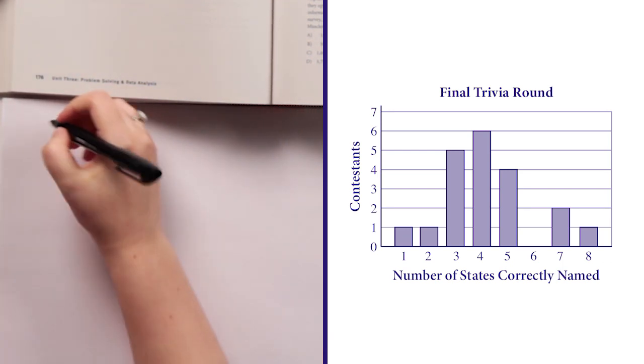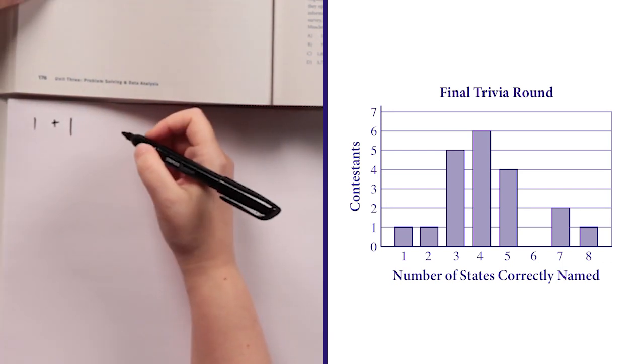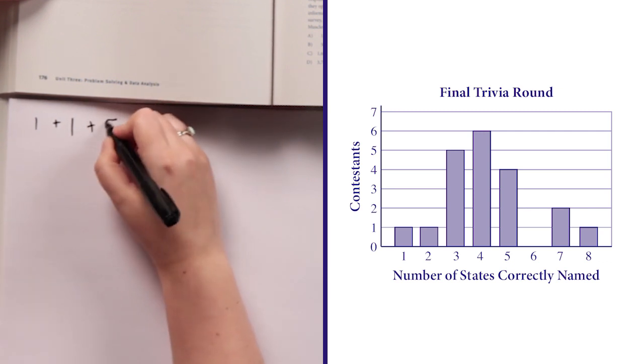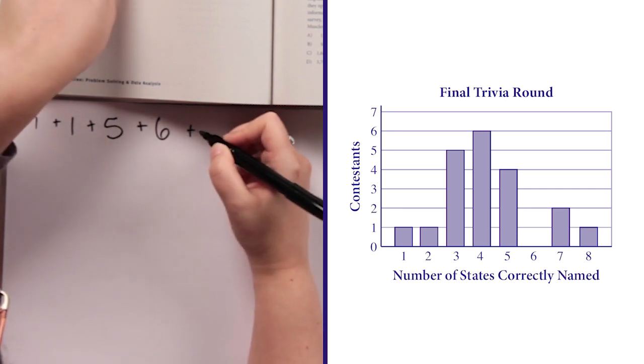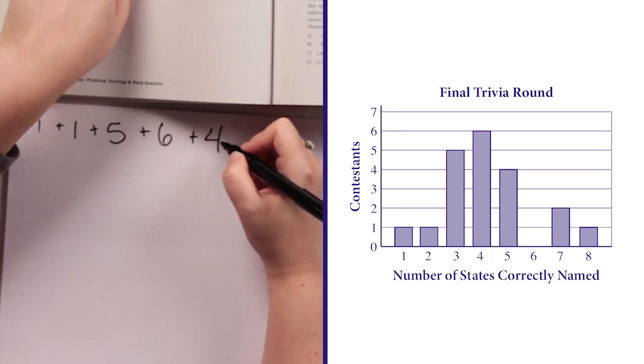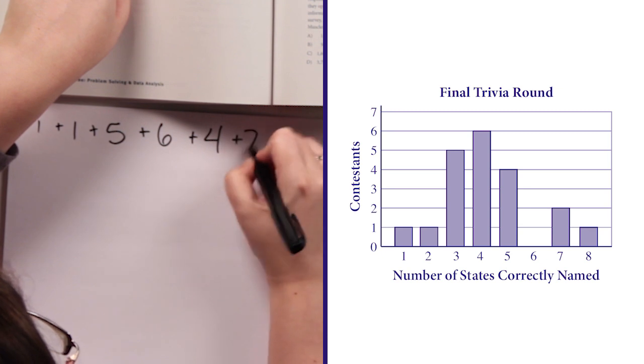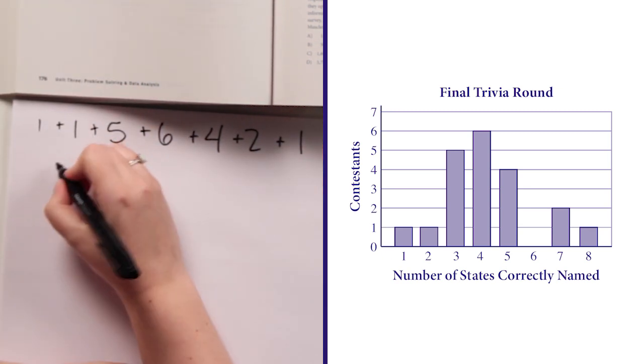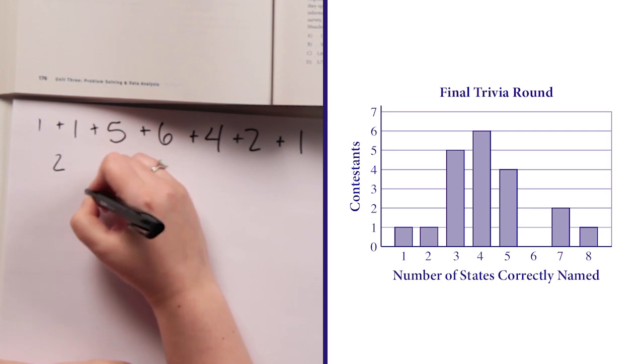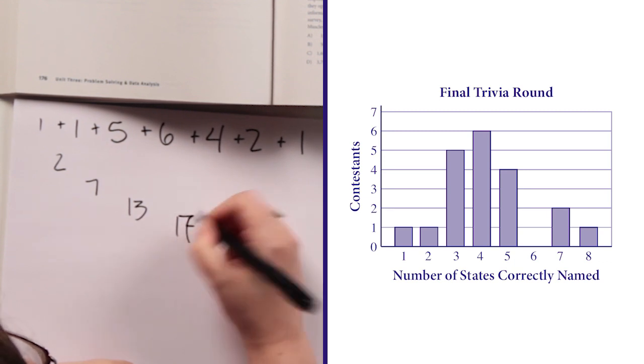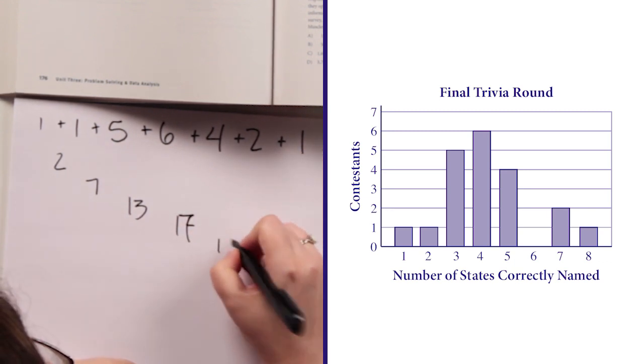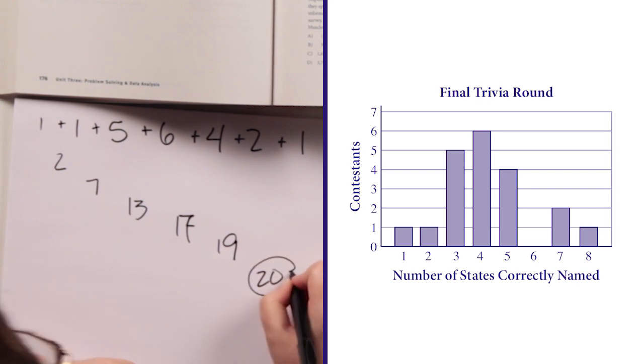So for the first one, it's just one, and then another one, and then five, and then six, and then four, and nobody here, and then two, and then one. So if I add this up, this is two, plus five is seven, plus six is 13, plus four is 17, plus two is 19, plus one is 20 contestants, which is answer choice D.